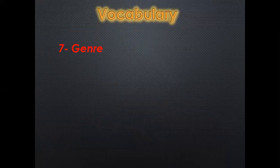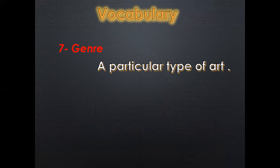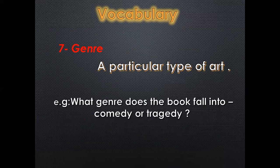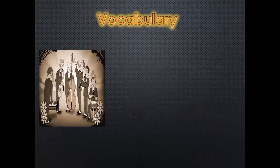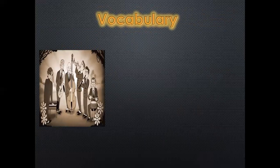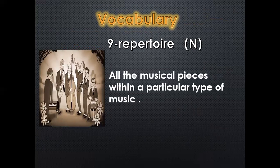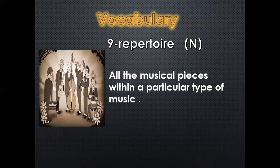What do we mean by 'genre'? Genre means a type of art — a particular type of art. For example, what genre does this book fall into? It is comedy or tragedy. So genre means the type. What about 'repertoire'? Repertoire means all the musical pieces — such as drums, piano, and guitar — within a particular type of music.